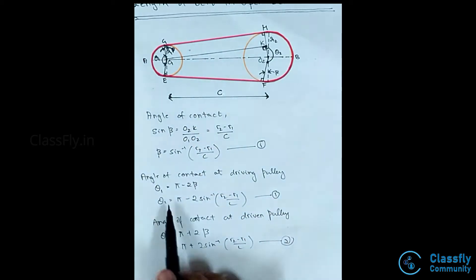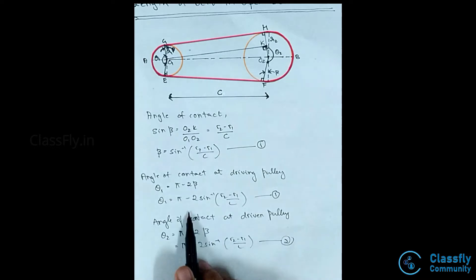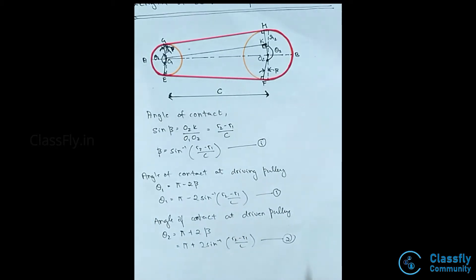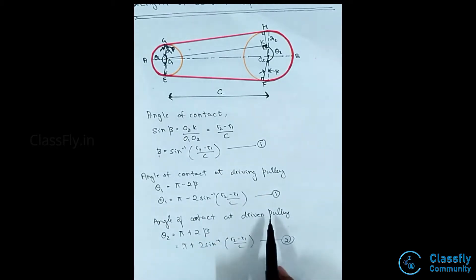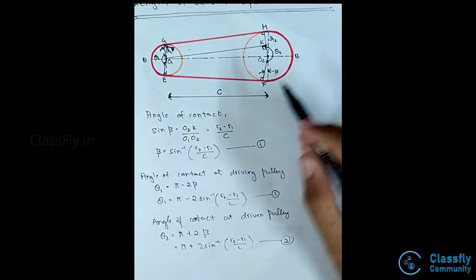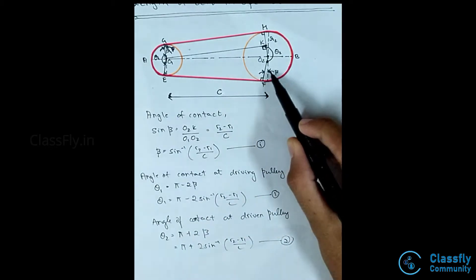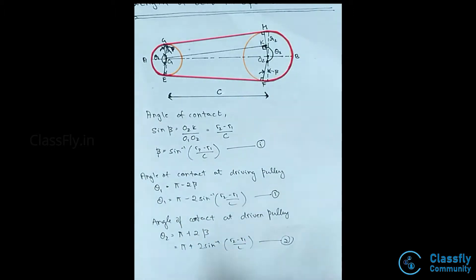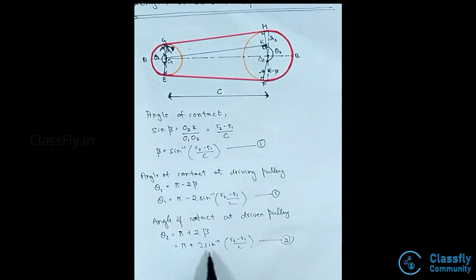Hence theta 1 = pi minus 2 sine inverse of (r2 - r1) divided by C. Similarly, the angle of contact at the driven pulley, theta 2, is given by pi plus 2 beta, which can be written as pi plus 2 sine inverse of (r2 - r1) divided by C.